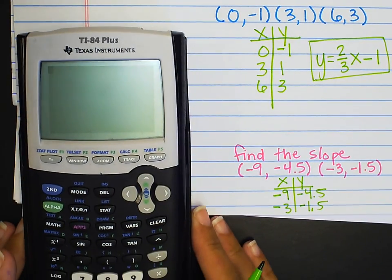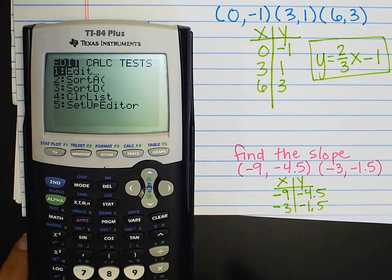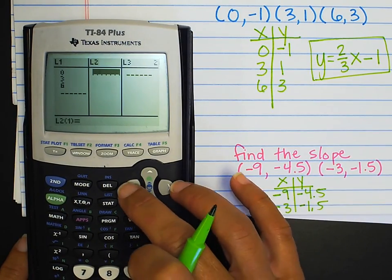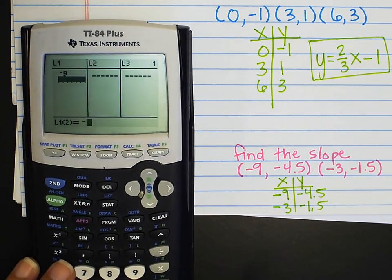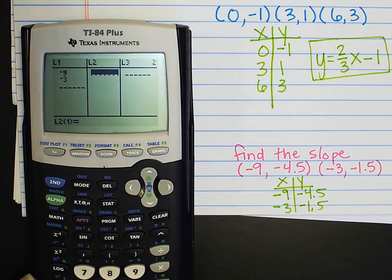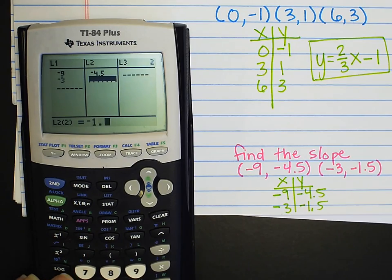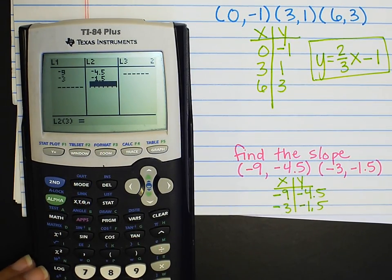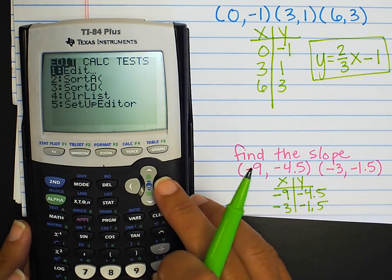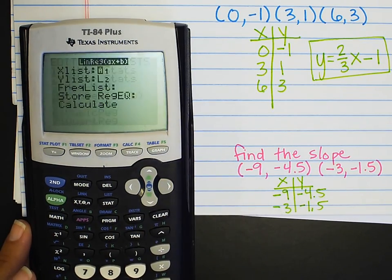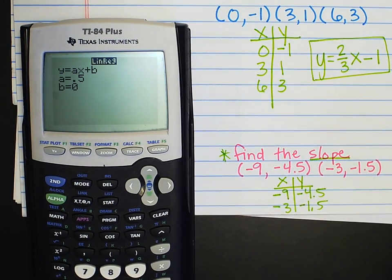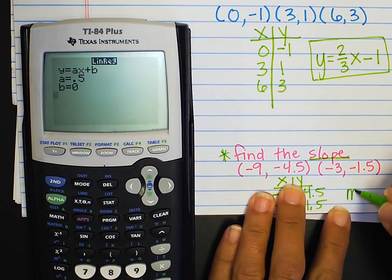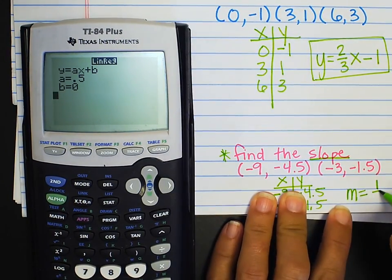And I can use the same process in the calculator. So, here, stat, edit. I'm going to clear out my list using the arrow keys and the clear button. And then I'm just going to type in negative 9, negative 3, negative 4.5, negative 1.5. So, I double check that my lists are correct. Back to stat, over to calc, down to linear regression. And there is the equation of my line. Now, it gave me the whole equation. This question asks only for the slope. So, when I answer this question, I'm going to tell what the slope is. Slope is 1 half.